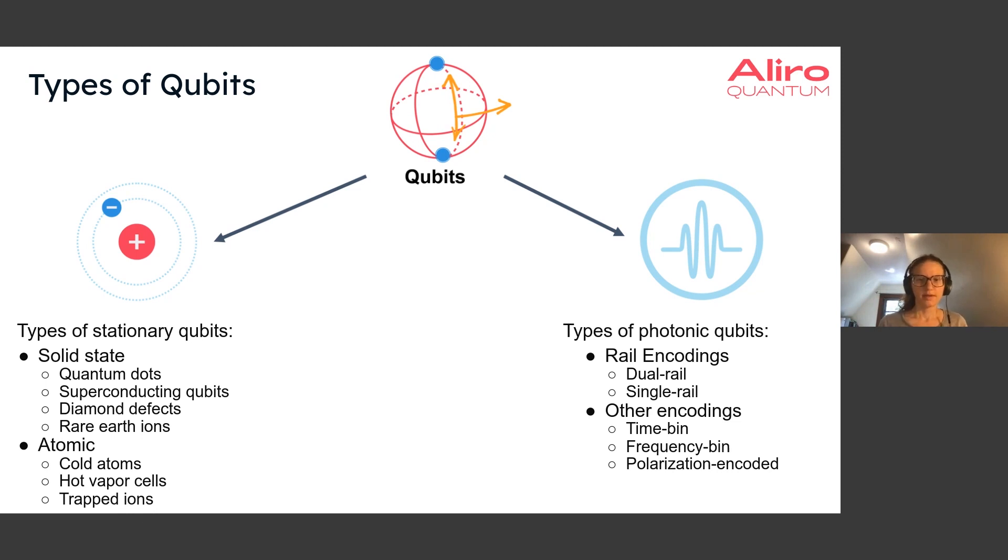Throughout the rest of this talk, we'll get into the details of specific implementations of both stationary qubits and photonic qubits. We'll discuss different types of solid-state stationary qubits and atomic stationary qubits. On the photonic qubit side, we'll discuss ways of encoding qubits into photons, including rail encodings and other encodings such as time-bin, frequency-bin, and polarization encodings.